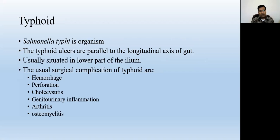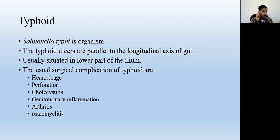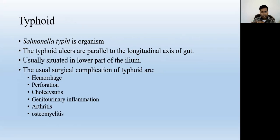The next condition is typhoid. The organism responsible for typhoid infection is Salmonella typhi. The typical ulcers of typhoid are present in the intestine parallel to the axis of the gut — meaning the ulcers always run parallel to the longitudinal axis of the gut.